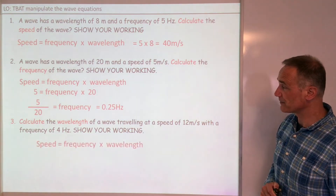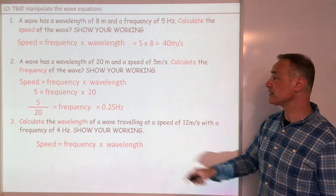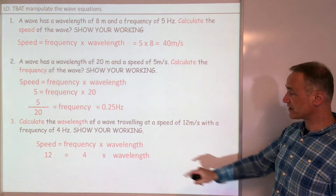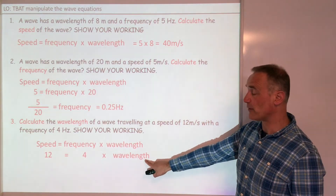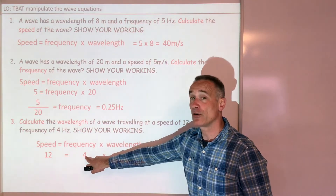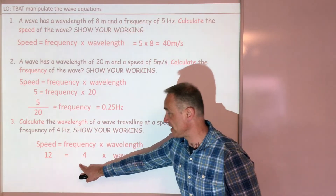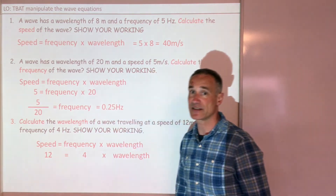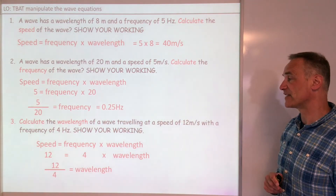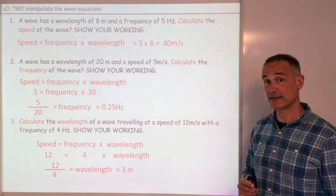Finally the last one: I've quoted the equation and put the values in. This time I want wavelength. It's being multiplied by 4, so I do the opposite — divide — and take 4 down to the other side. I get 12 divided by 4, which is 3 metres.